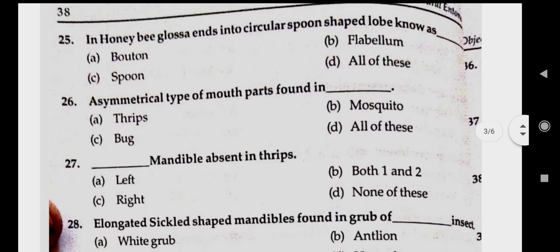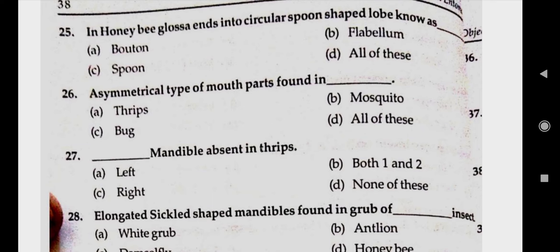Question number twenty-five: in honeybee, glossa ends into a circular spoon-shaped lobe known as. Answer D, all of these — buttons, flabellum, spoon.